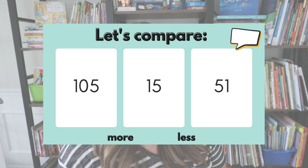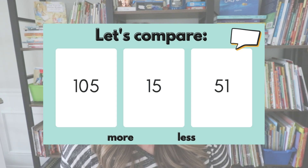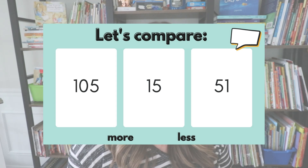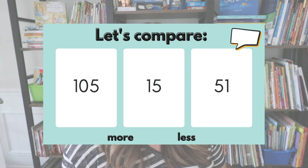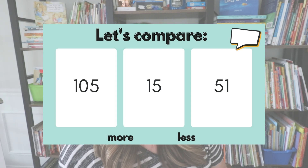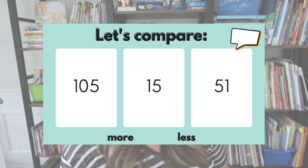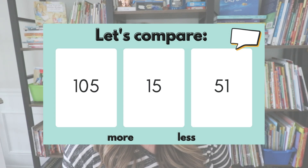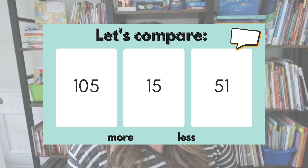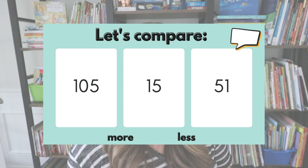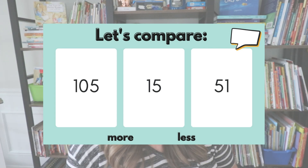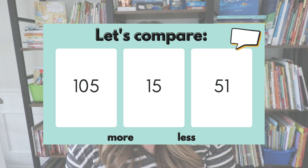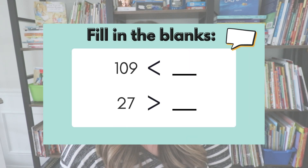I pointed out: 'Wait a second, I see a lot of the same numbers here — I see a lot of ones, I see a lot of fives.' When students gave me an answer comparing these numbers, I would ask them how they knew. For instance, if a student said '15 is less than 51,' I'd ask: 'How do you know that — they both have a one and they both have a five?' And they would explain a little bit more.